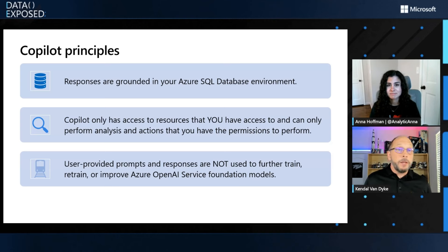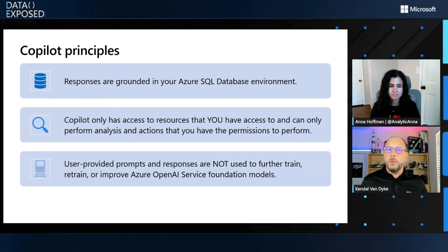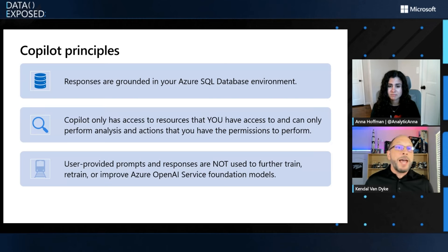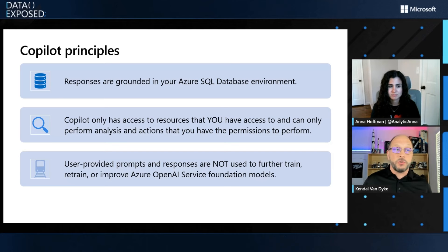The second thing is Copilot only has access to the resources that you have access to. If you don't have permissions, for example, to run a DMV query or to look at query store, Copilot will not be able to do it on your behalf. There are certain things that we can look at — like service status — that are publicly available sources. But when it comes to sensitive data, especially your database when it comes to running a query against it, you have to have access to it in order for Copilot to have access to it. Your prompts and responses are not used to train or improve the Azure OpenAI service foundation models. We take this very, very seriously.